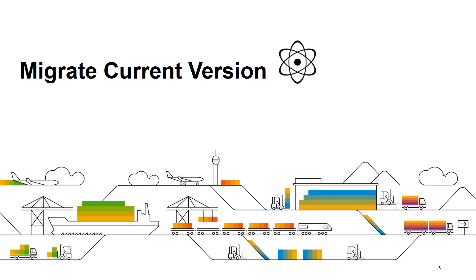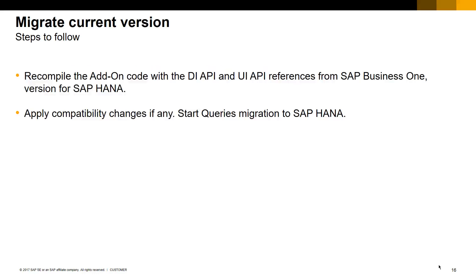Now that we have analyzed our current code and found where our changes need to be made, it is time to migrate our add-on to SAP Business One for SAP HANA. We should first recompile our add-on code with the new DI and UI APIs from the version of SAP Business One for SAP HANA that we are migrating to, apply any compatibility changes such as to forms, tables, menus, etc., and start migrating any Microsoft Transact SQL queries to SAP HANA SQL Script.